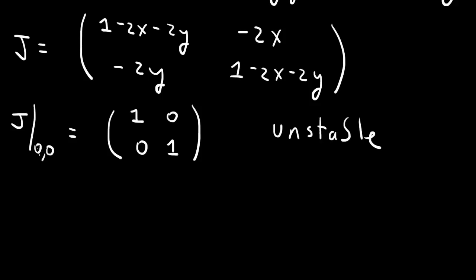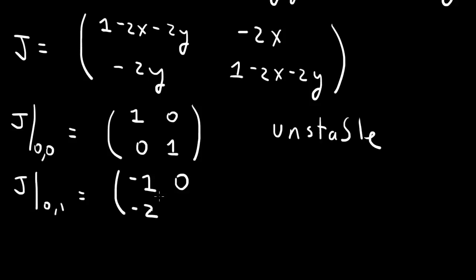The other fixed points were (1, 0) and (0, 1). Let's evaluate J at (0, 1). With x equals 0 and y equals 1: the (1,1) entry is 1 minus 2 equals minus 1, the (1,2) entry is 0, the (2,1) entry is minus 2 times 1 equals minus 2, and the (2,2) entry is 1 minus 2 equals minus 1. This is a lower triangular matrix, so the eigenvalues are the diagonal elements: minus 1 and minus 1. The real part is negative, so (0, 1) is a stable fixed point.